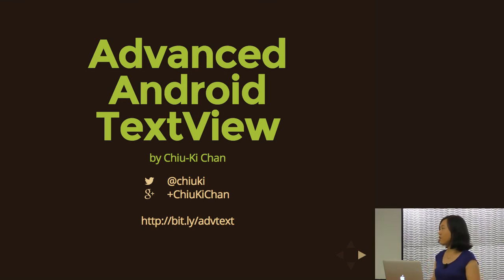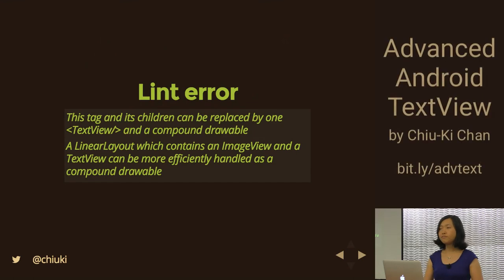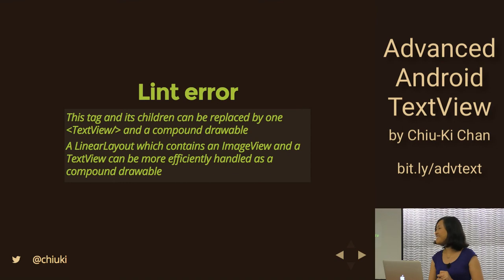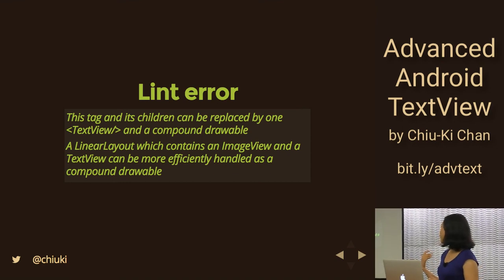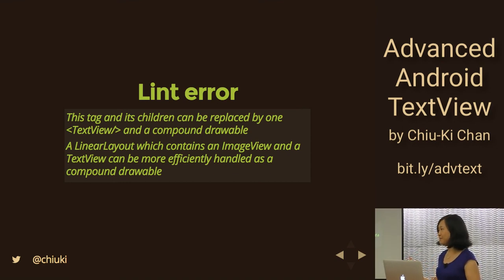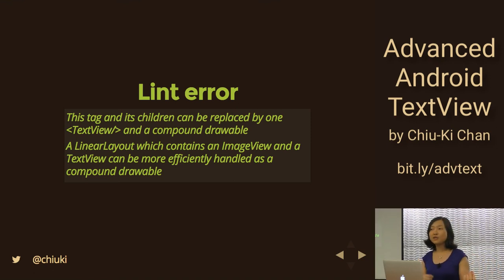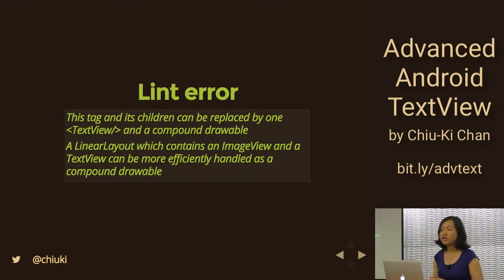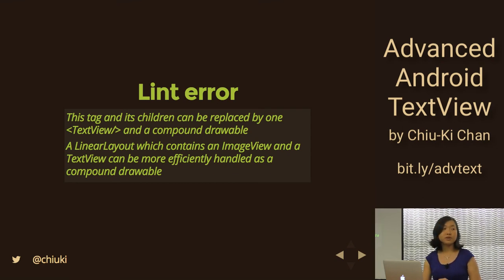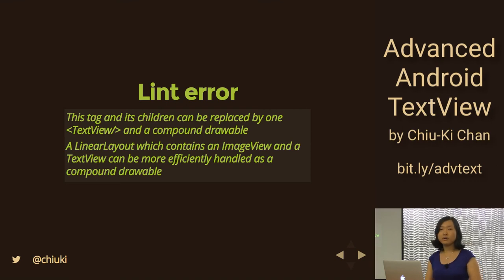We're going to start this talk with a quote. It says you are trying to display an image with a TextView and you wrap it inside a LinearLayout because it's right next to each other, but it's trying to tell you that TextView already knows how to display images and suggests using a compound drawable to display that image.